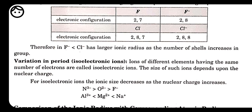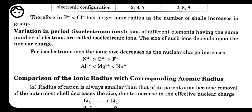For cations: Na⁺ has 10 electrons but 11 protons. Mg²⁺ has 10 electrons but 12 protons. Al³⁺ also has 10 electrons but 13 protons. All have the same number of electrons but different number of protons. For cations, the one with fewer protons (less nuclear charge) has the greater size. So sodium ion is bigger than the aluminium ion.